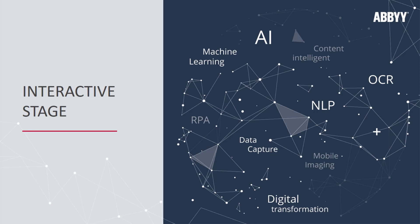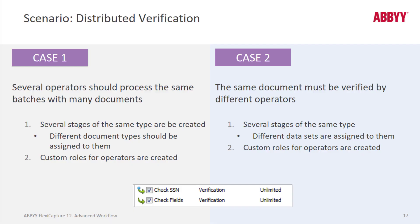We can talk about custom interactive stages. We just covered automatic stages. So if we set up a custom verification stage, we could assign different document types to certain users, and in that way multiple people are processing large batches at the same time. Another use case could be when the same document must be verified by different operators, and certain fields are assigned to certain users — referred to here as different datasets.